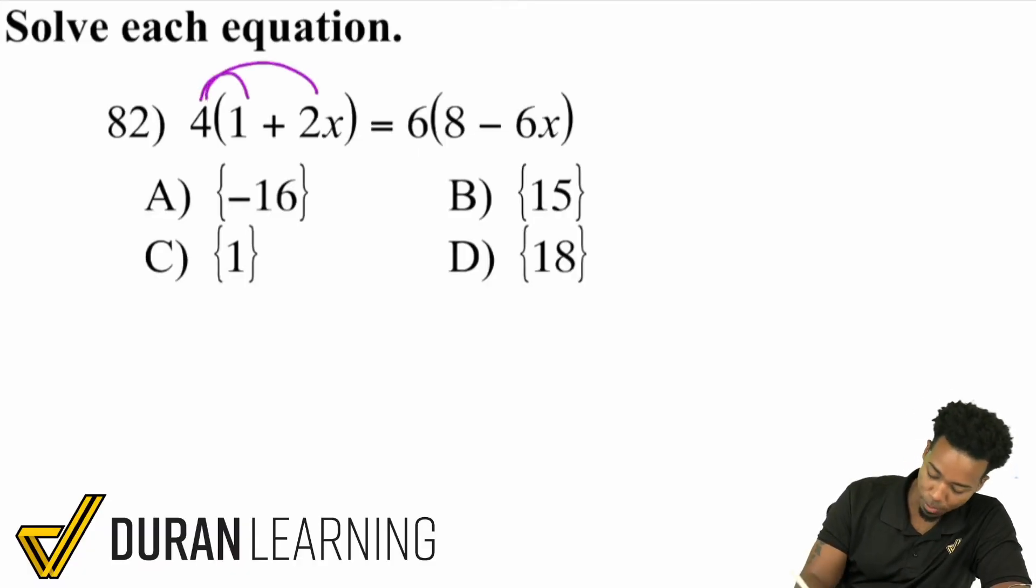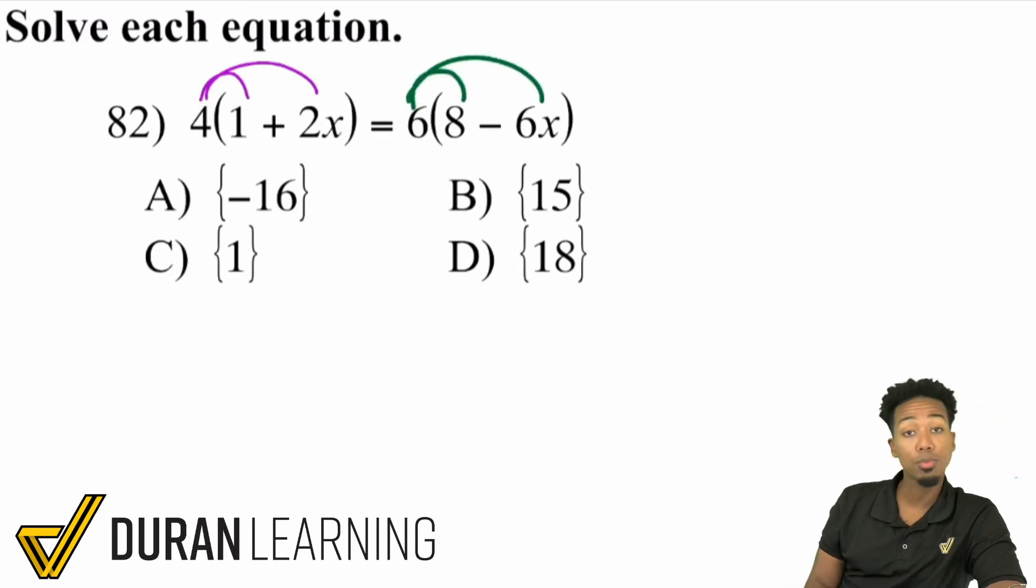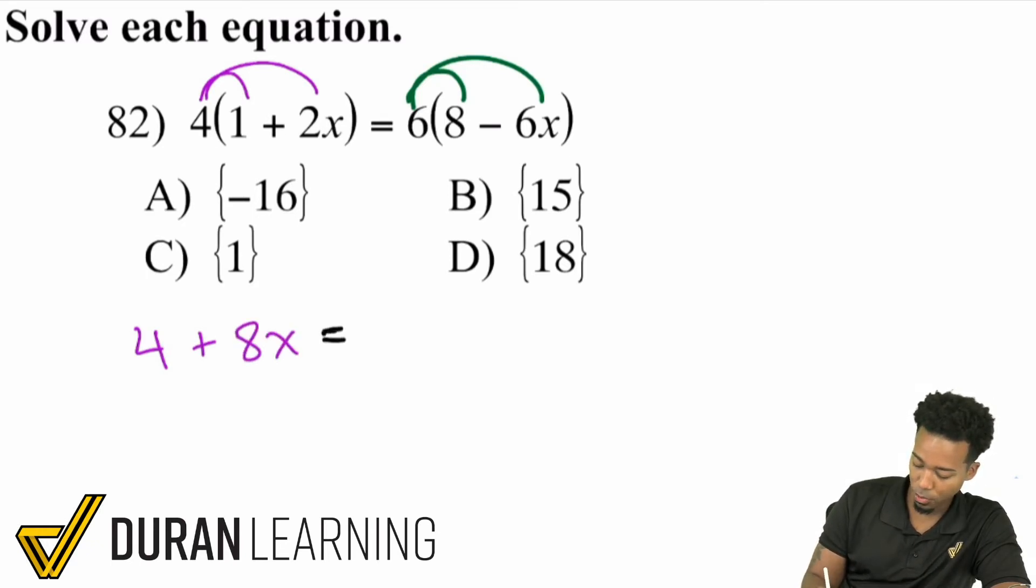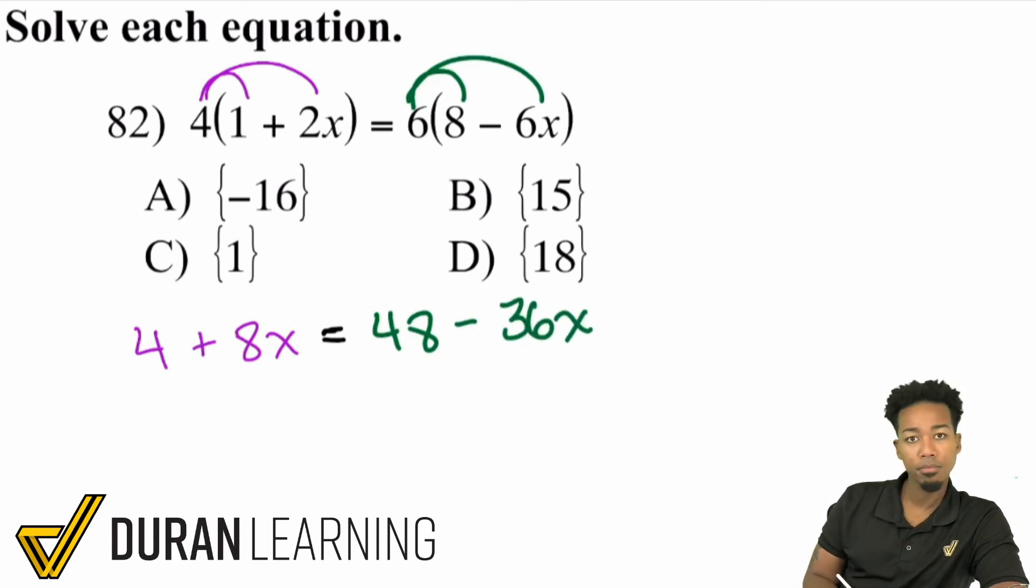So distribute that 4 into both of these terms. And on this side, we can distribute the 6 to both of these terms. Nice and easy. Let's get to work. We have 4 times 1, which is 4, and then 4 times 2x, which is 8x. On the right side, we have 6 times 8, which is 48, and then 6 times negative 6, which is negative 36x.